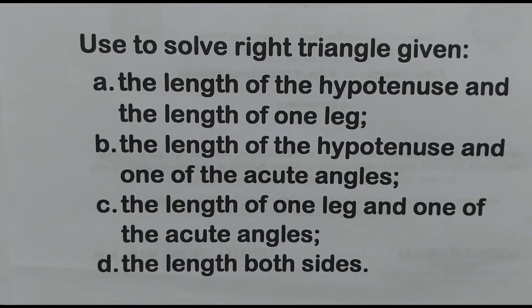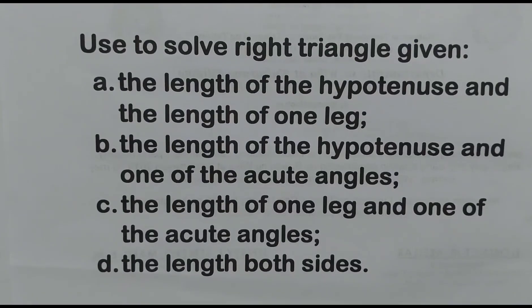In the Pythagorean theorem, only the sides are given and unknown. While with trigonometric ratios, we can use them in solving problems about right triangles where the sides and one of the angles are known. We also have here when to use these trigonometric ratios.